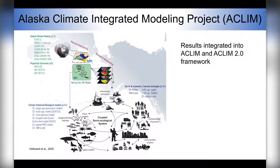We're also incorporating this output into the Alaska Climate Integrated Modeling Project, which is a large multidisciplinary effort spanning the physics to the fisheries. Results from the first iteration of ACLIM are coming out now, and we're also expanding the use of this OA model output in the ongoing ACLIM 2.0 project.